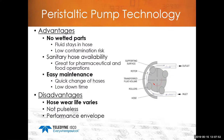Let's look at advantages and disadvantages. No wetted parts — the fluid stays in the hose with low contamination risk. The only concern is if the hose starts to wear and develops a crack. Hose wear life varies depending on roller speed, run time, hose material, and fluid properties — rubber flexes and wears over time with repeated rolling. If hose wear is a concern for your application, peristaltic technology may not be ideal; you'd want a reciprocating pump or syringe pump instead.